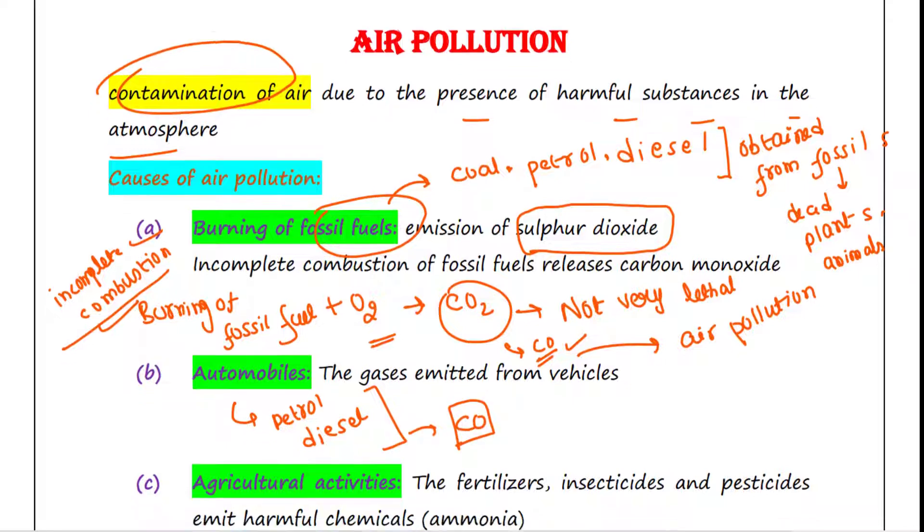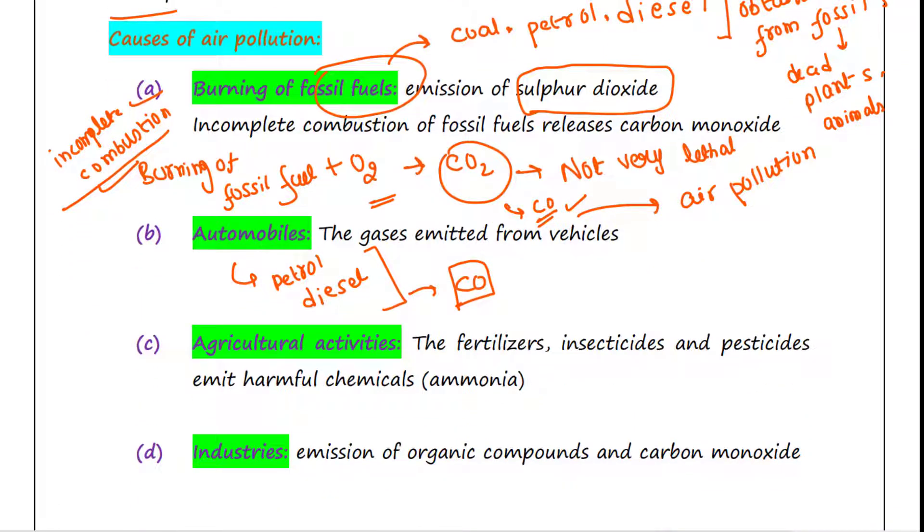Next is agricultural activities. The fertilizers, insecticides, and pesticides emit harmful chemicals such as ammonia in the atmosphere and cause air pollution. Here pollution is caused by ammonia since ammonia is a very harmful chemical.